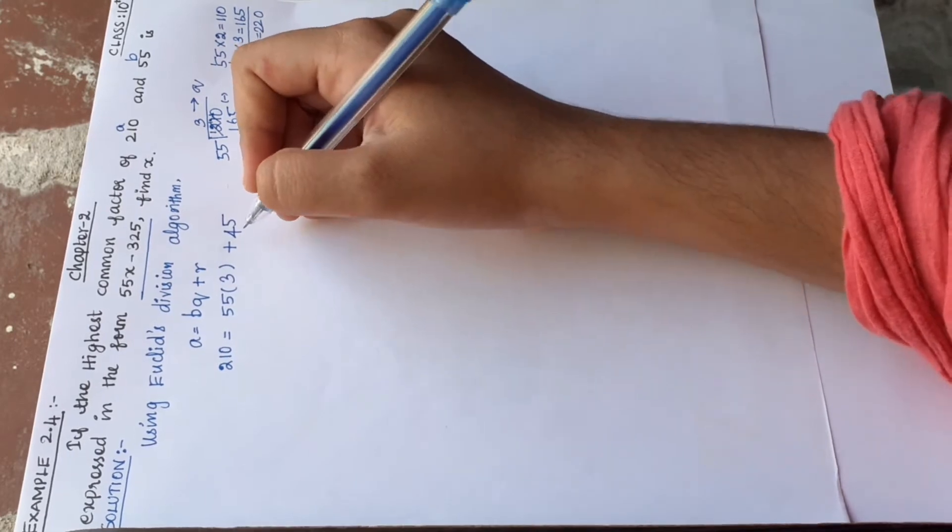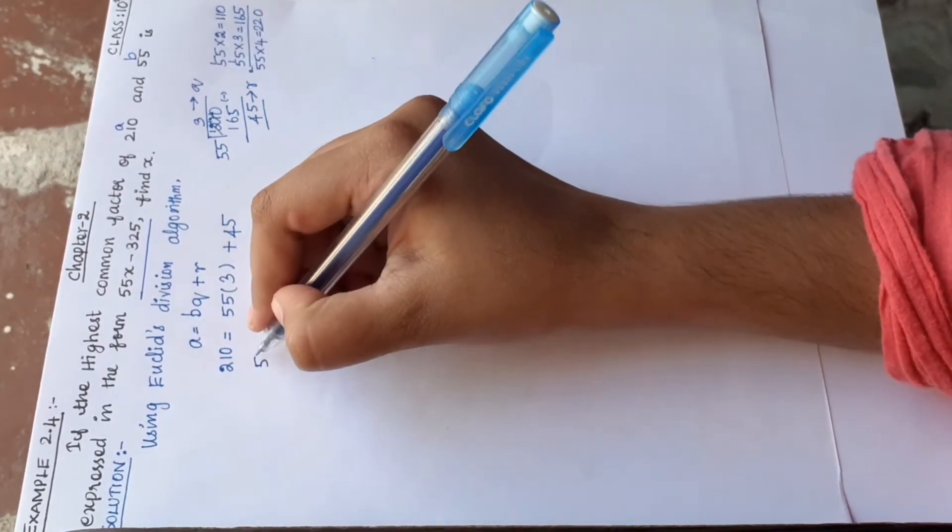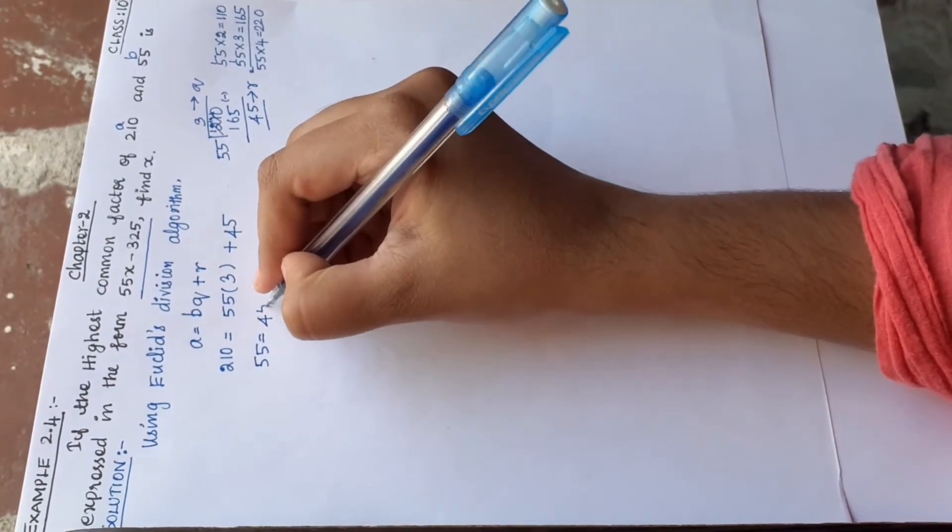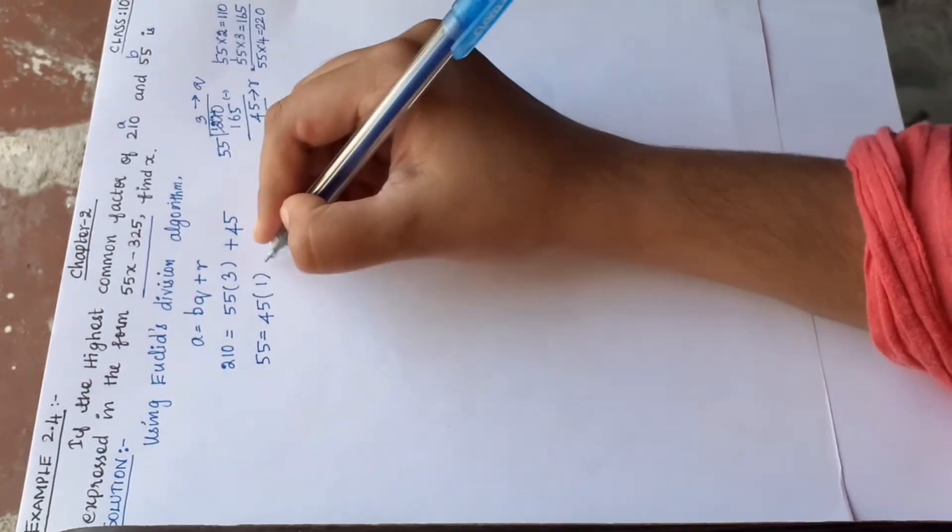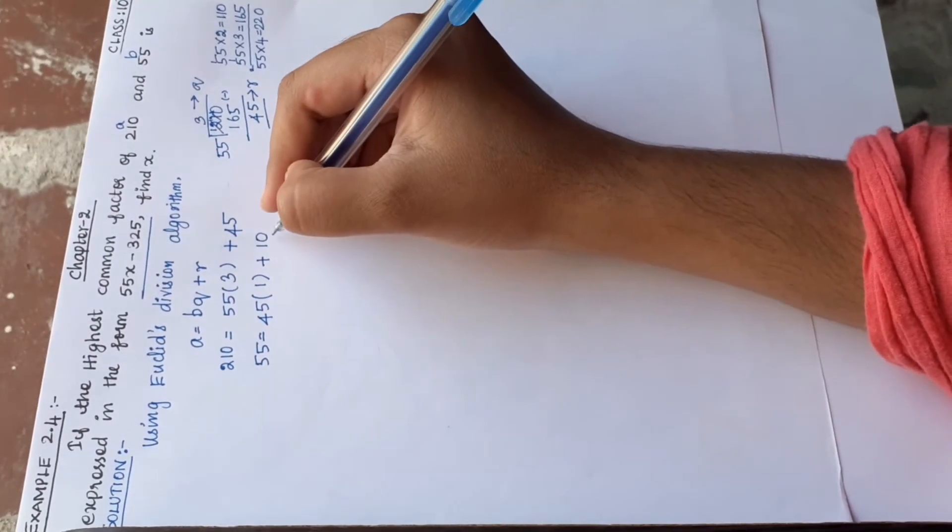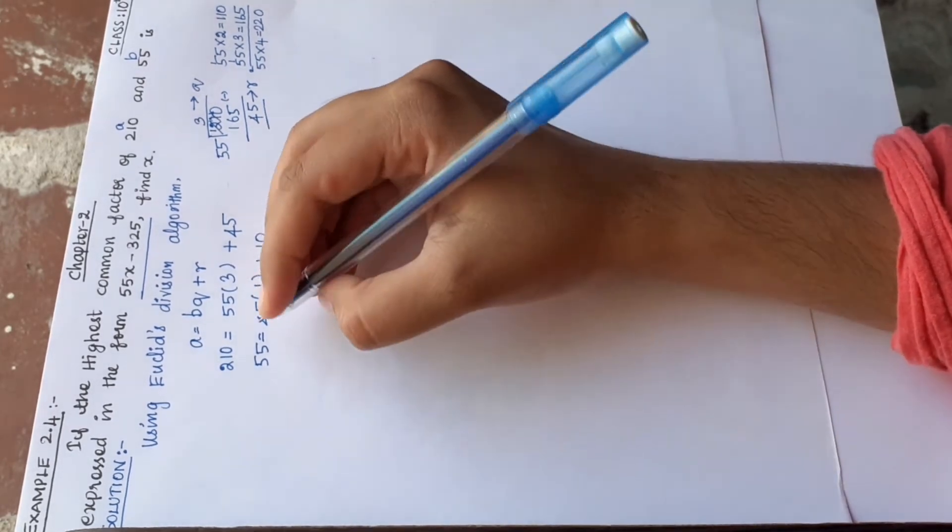So again divide. 55 divided by 45. 55 equals 45 × 1 plus 10.